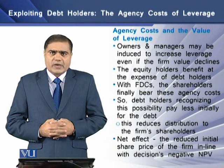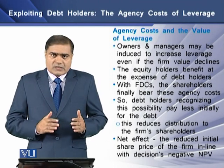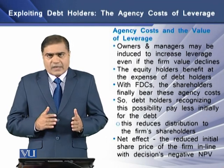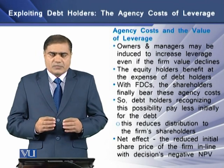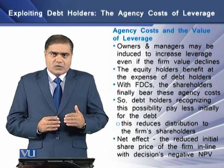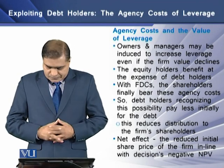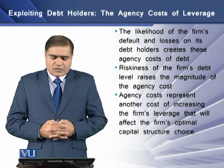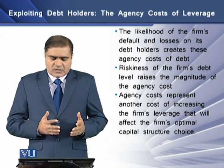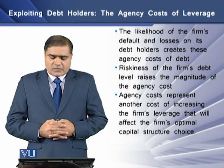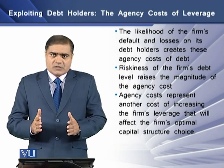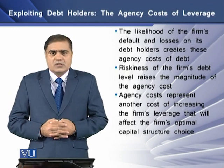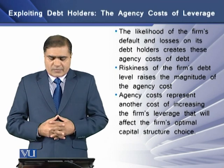The net effect is a reduced initial share price of the firm, and that reduction is in line with the negative NPV decisions of the project. At the initial stage, the price of shares reduces in line with the negative NPV of the firm's decisions. The likelihood of the firm's default and losses on debt holders create these agency costs of debt. The riskiness of the firm's debt level rises with the magnitude of agency costs, representing an additional cost of increasing leverage that affects the firm's optimal capital structure choice.